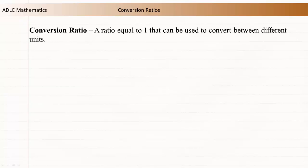A conversion ratio is a ratio equal to 1 that can be used to convert between different units. Let's look at an example. There are 1000 milliliters in 1 litre.